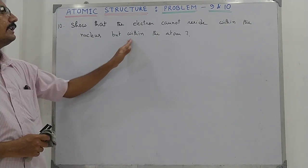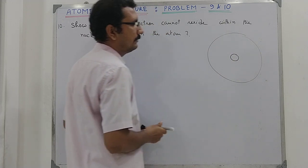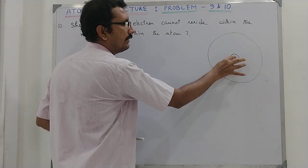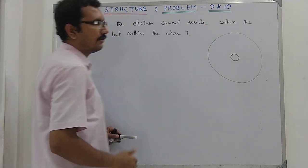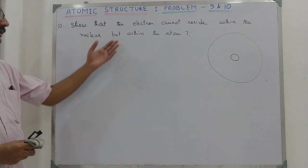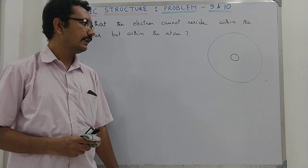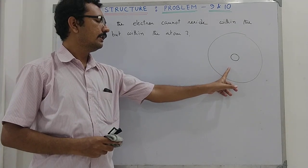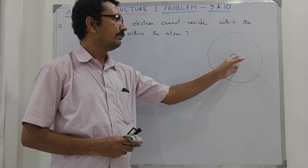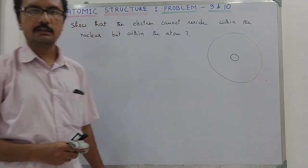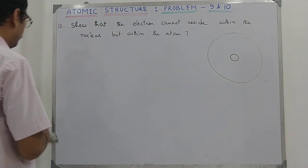The nucleus is at the center and the atom is the larger region. The electron is not allowed to reside within the nucleus, but only within the extra-nuclear part. If we can prove this, we support Bohr's theory, which says electrons move around the nucleus in definite orbits — they remain in the extra-nuclear part. For this, we need the Heisenberg uncertainty principle.